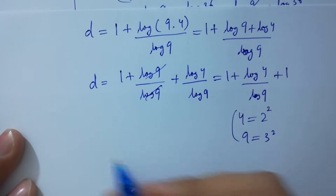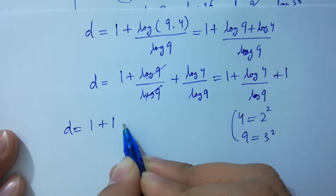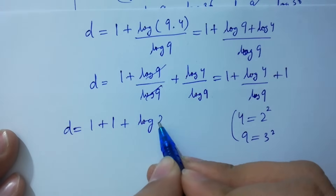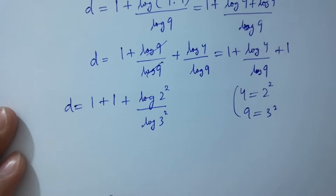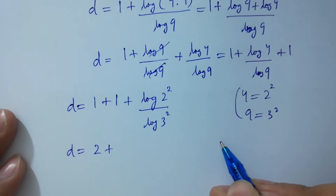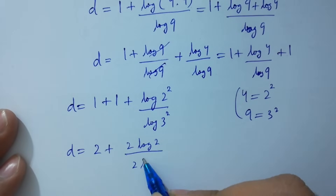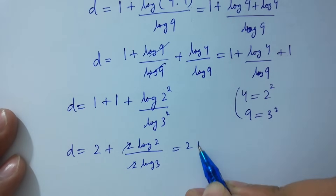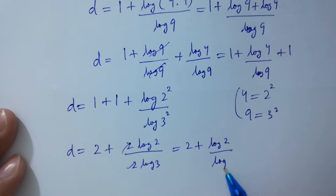As 4 equals 2 squared and 9 equals 3 squared, d equals 1 plus log 2 squared over log 3 squared, which gives 1 plus 2 log 2 over 2 log 3. The 2s cancel, so d equals 2 plus log 2 over log 3.